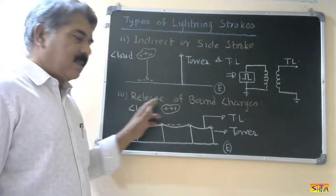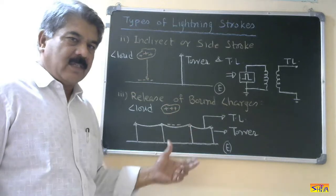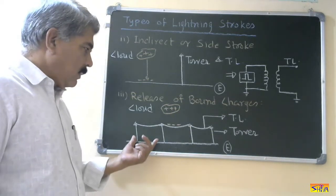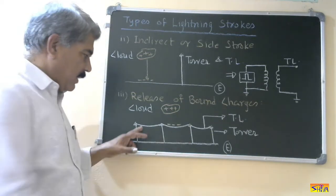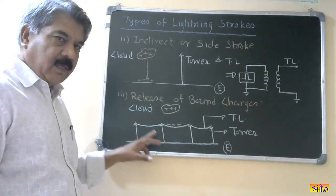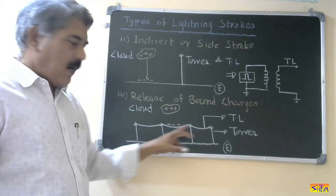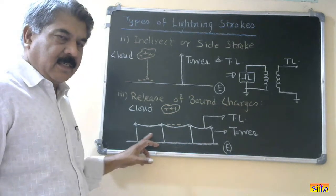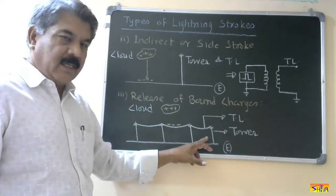The third type is called release of bound charges. I have shown transmission line towers 1, 2, 3, and 4, along with the transmission line conductors and the earth. Suppose a cloud is present.